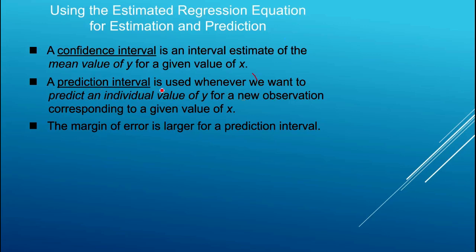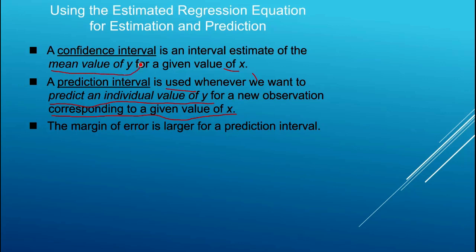The prediction interval is used whenever we want to predict an individual value of y for a new observation corresponding to a given value of x. With a confidence interval we have an interval estimate of the mean value of y — sometimes called an in-sample prediction. The difference is that when calculating the mean value of y, there's really one source of variation to account for: the variation in the betas when we estimate them, since beta is a random variable.